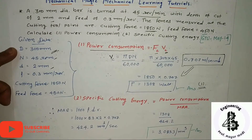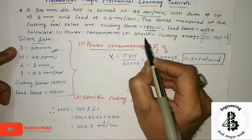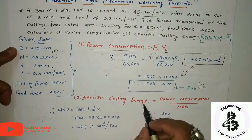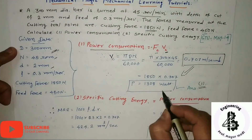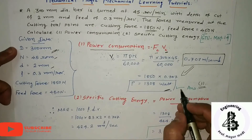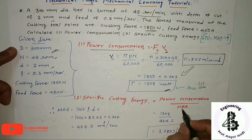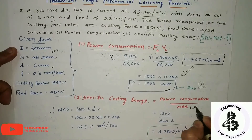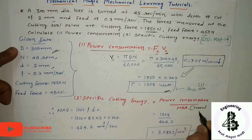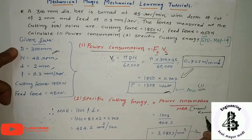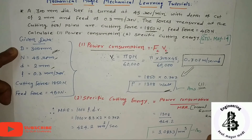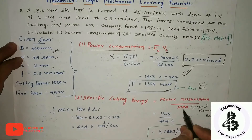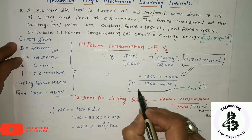For part two, specific cutting energy is defined as power consumption divided by the metal removal rate (MRR). Since I already have the power consumption, I need to first calculate the MRR.